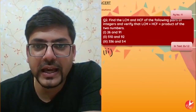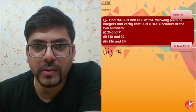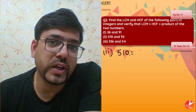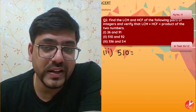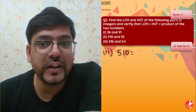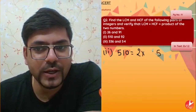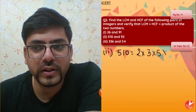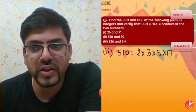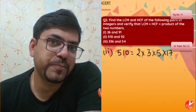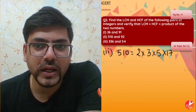Now the second pair. For 510: I'll write its prime factorization. Because of the factor 10, we get 2 and 5, and then 17 × 3 gives 51, so 510 = 2 × 3 × 5 × 17.